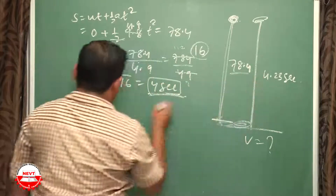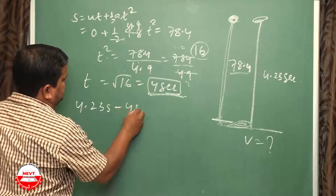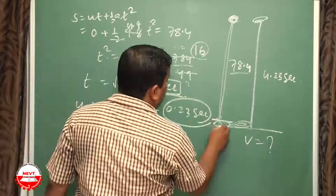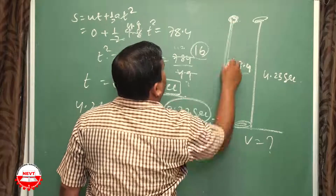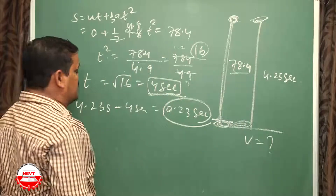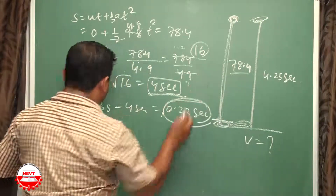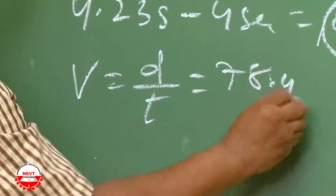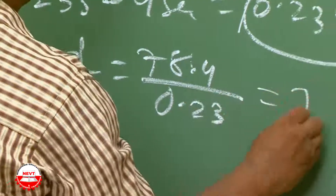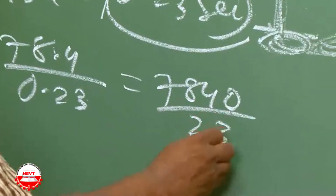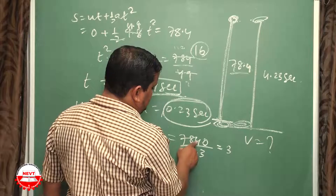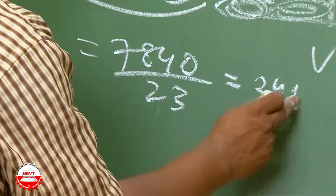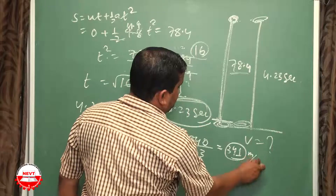Remaining time = 4.23 − 4 = 0.23 seconds. In this time interval, the sound produced at the ground travels 78.4 meters back up to the worker. Therefore, speed = distance / time = 78.4 / 0.23 ≈ 341 meters per second.